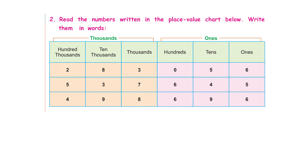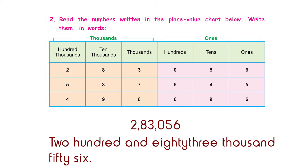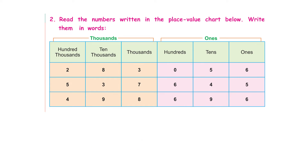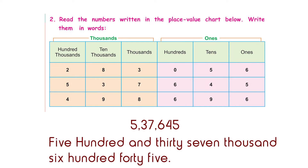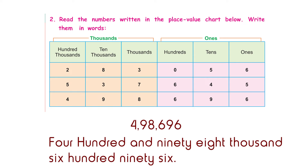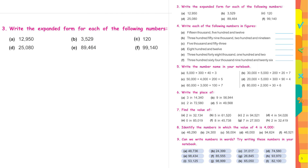The first number is two hundred and eighty-three thousand and fifty-six. The second is five hundred and thirty-seven thousand six hundred and forty-five. The third is four hundred and ninety-eight thousand six hundred and ninety-six. Question number 3: write the expanded form for each of the following.